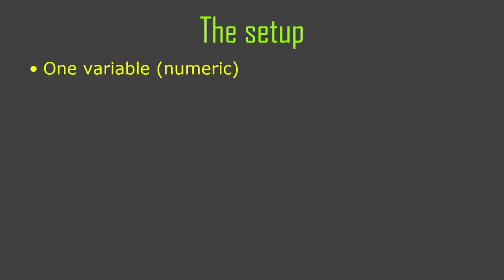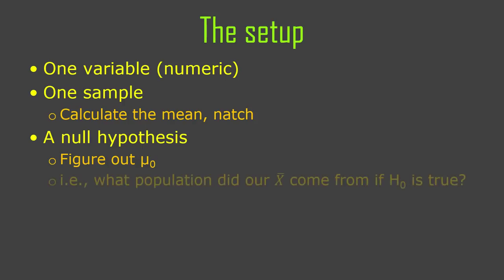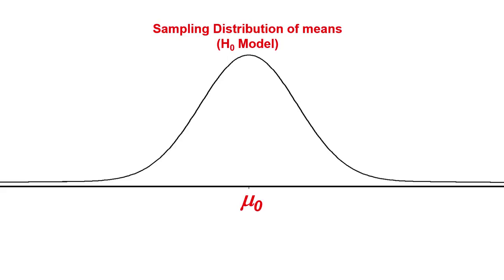The setup for this is you have one variable — a numeric variable. You have one sample of observations from a population using that variable, and you calculate the mean. Then you have this null hypothesis that came from somewhere else, and from that null hypothesis you figure out what the implied value of the null hypothesis mean should be — mu zero. What should the mean of the null hypothesis distribution of raw scores and therefore the distribution of means be? So we're specifying this distribution of means with the null hypothesis model, putting mu zero right in the middle, and specifying a cut-off level so we know when we should reject the null.